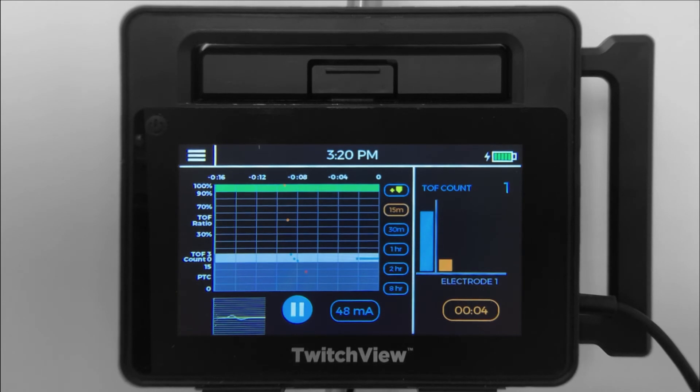Once reversal is administered, you can see patient recovery in real time and confirm a TRAIN-4 ratio of greater than 90% is achieved prior to extubation. A TRAIN-4 ratio of greater than 90% is indicated by the green highlight.